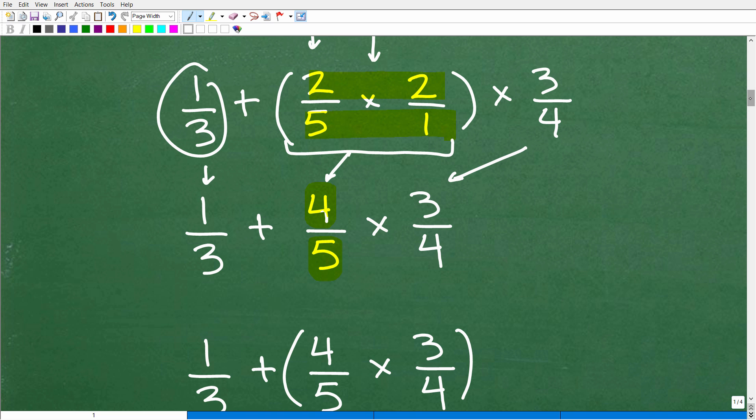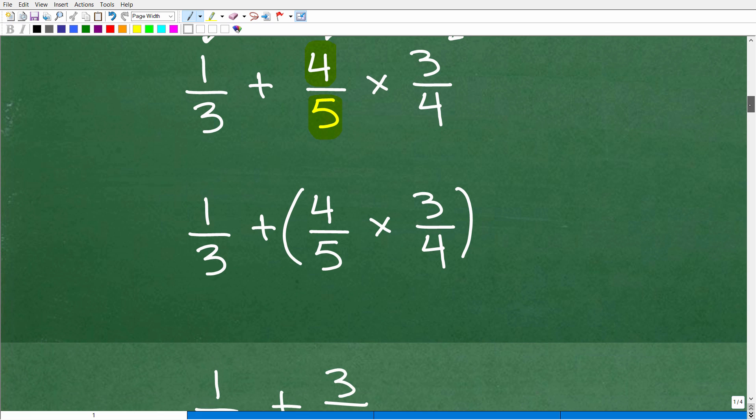Okay, so now this hopefully should be fairly easy. Now that I showed you how to multiply fractions, the next step is we have addition and multiplication. We're clearly going to have to do the multiplication before the addition. So we're going to go ahead and do this part of the problem. Again, I'm putting in some parentheses here to make it nice and easy.